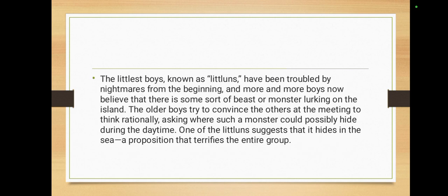Not long after the meeting, some military planes engaged in a battle high above the island, but the boys below did not notice the flashing lights and explosions in the clouds. A parachutist fell to earth on the signal fire mountain. Sam and Eric, the twins responsible for watching the fire at night, were asleep and did not see the parachutist land. When they woke up, they saw the enormous shape of the parachute and heard strange clapping noises, and thinking it was the beast, rushed back to camp in terror reporting that the beast had attacked them.